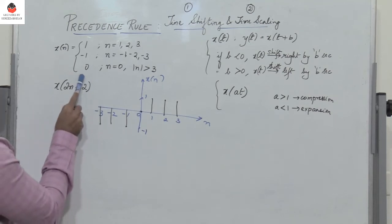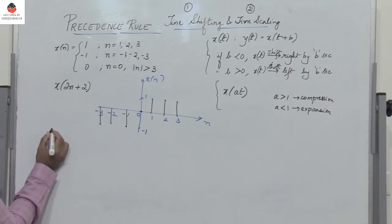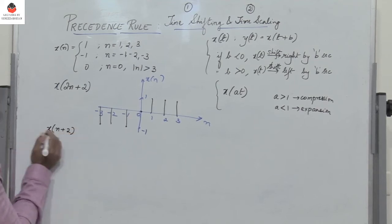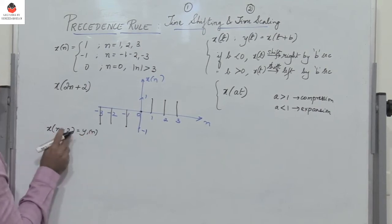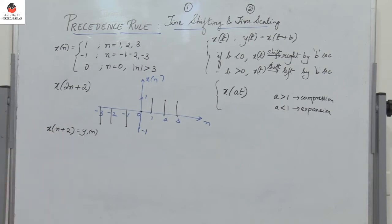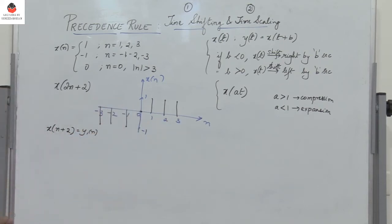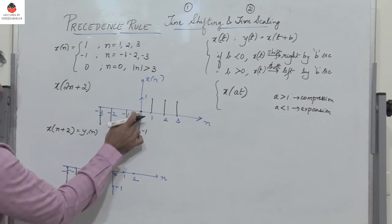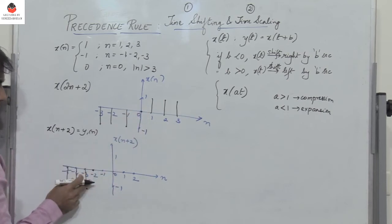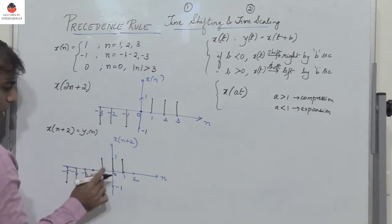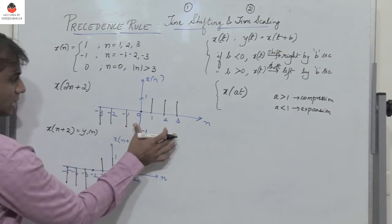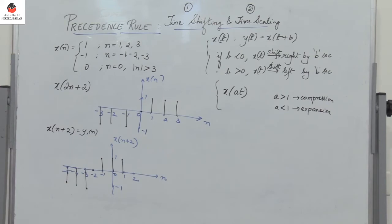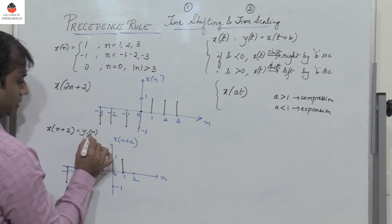This signal has to be time shifted and time scaled — we need to find x of 2n plus 2. According to the precedence rule, first time shift the given signal, so first find x of n plus 2. Let y1 of n equal x of n plus 2. The value of b is greater than 0, so I need to shift this signal left by 2. What is available at minus 3 will now be present at minus 5, minus 4, minus 3. n equal to 0 will now be present at n equal to minus 2, with 1 for n equal to minus 1, 0, and 1.